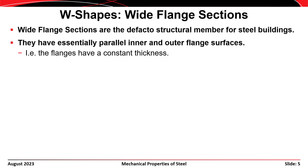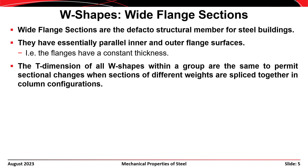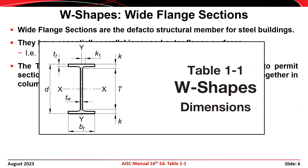Wide flange shapes are the de facto structural members for steel buildings—the shapes used most often. They have essentially parallel inner and outer flange surfaces, so flanges have a constant thickness over their width. There's another characteristic that makes W shapes well suited for building design: the T dimension of all W shapes within a given group is the same, permitting section changes with different weights that, when spliced together, have a common inside surface for the flanges.